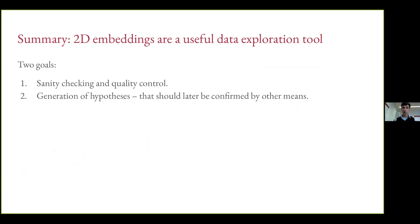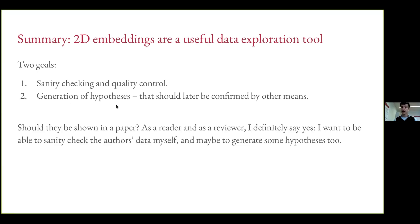In summary, I tried to argue that 2D embeddings can be a useful data exploration tool for two reasons. First, they allow sanity-checking and quality control of the data. Second, they allow generating hypotheses that one should later confirm by other means — other analyses or follow-up experiments. After everything is said and done and you've written a paper, maybe you're no longer relying on the embedding. But as a reviewer, I would definitely say: please include this in the paper, because I also want to be able to check your data and maybe generate hypotheses myself by reading it.